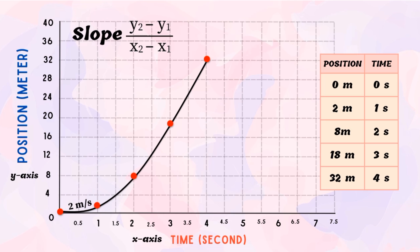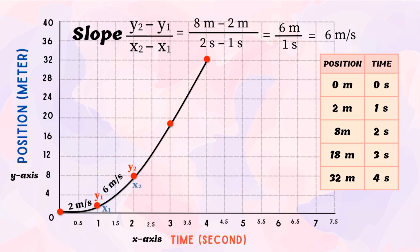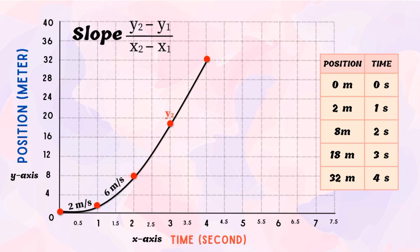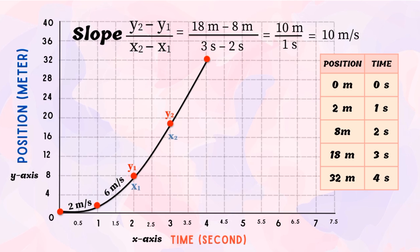For the next two points: y₂ = 8 m, y₁ = 2 m, x₂ = 2 s, x₁ = 1 s → 8 − 2 = 6 m ÷ 1 s = 6 m/s. For the third pair: y₂ = 18 m, y₁ = 8 m, x₂ = 3 s, x₁ = 2 s → 18 − 8 = 10 m ÷ 1 s = 10 m/s. For the last pair: y₂ = 32 m, y₁ = 18 m, x₂ = 4 s, x₁ = 3 s → 32 − 18 = 14 m ÷ 1 s = 14 m/s. The velocities are 2, 6, 10, and 14 m/s — clearly not constant.